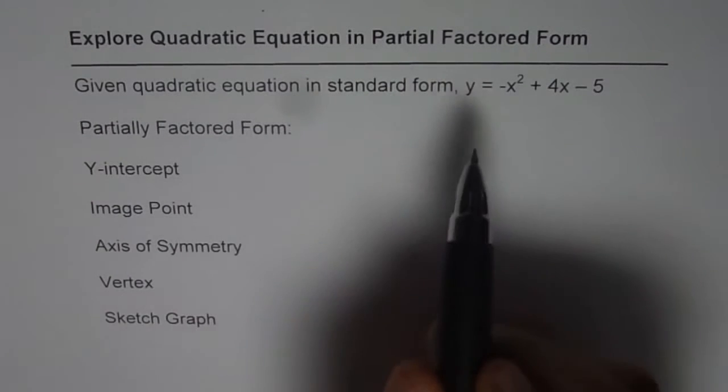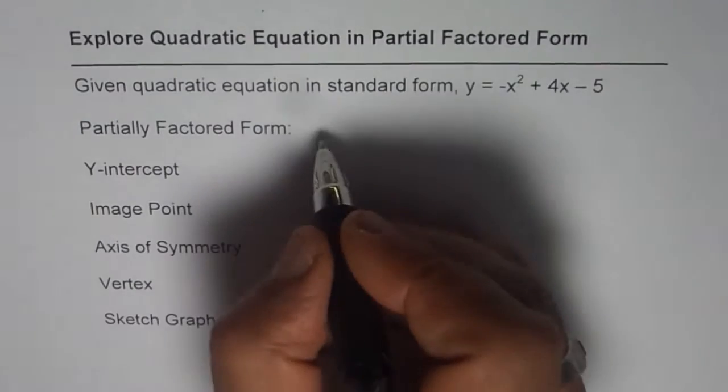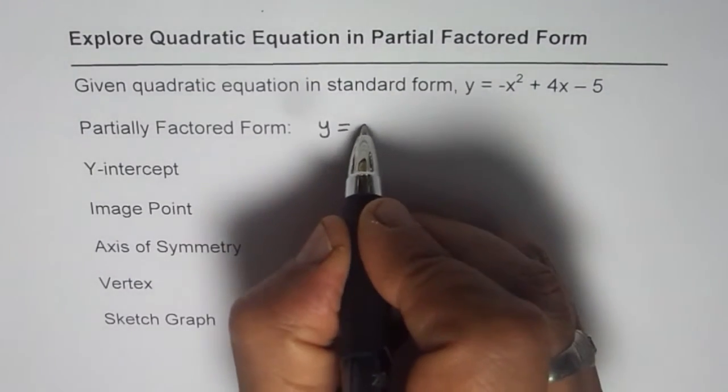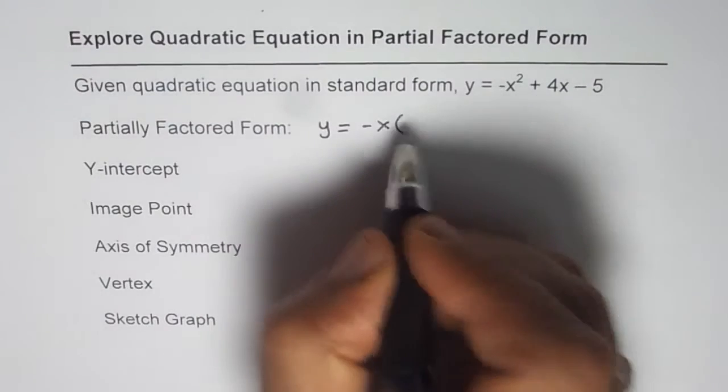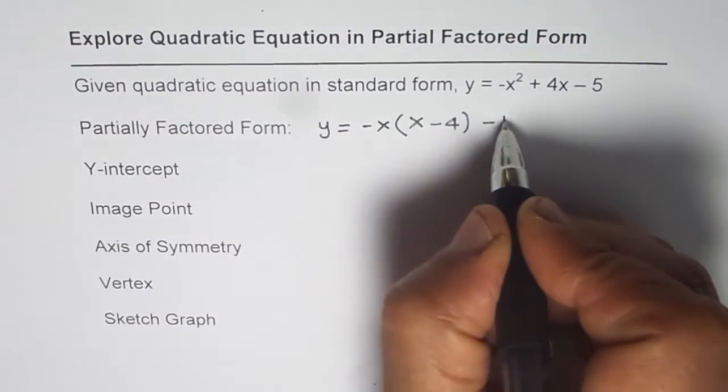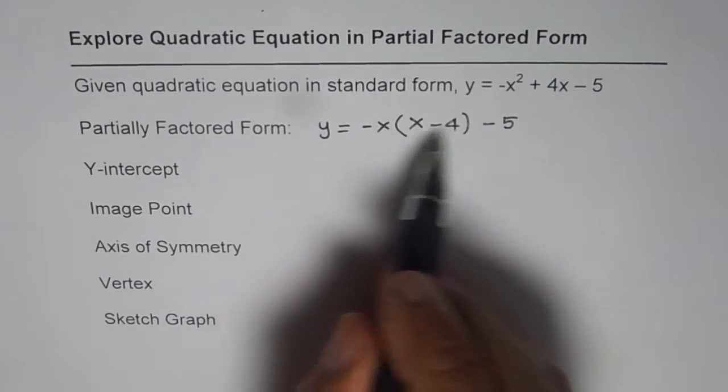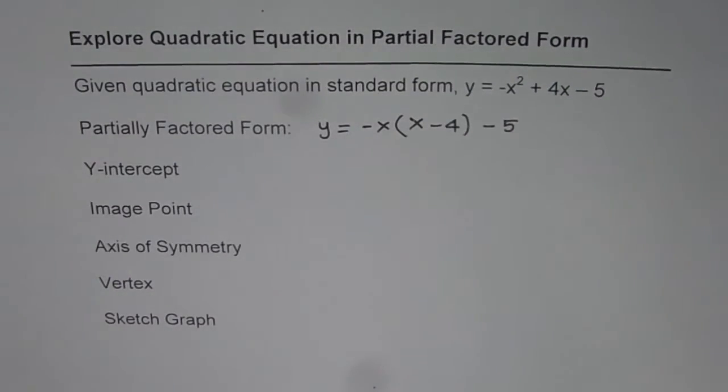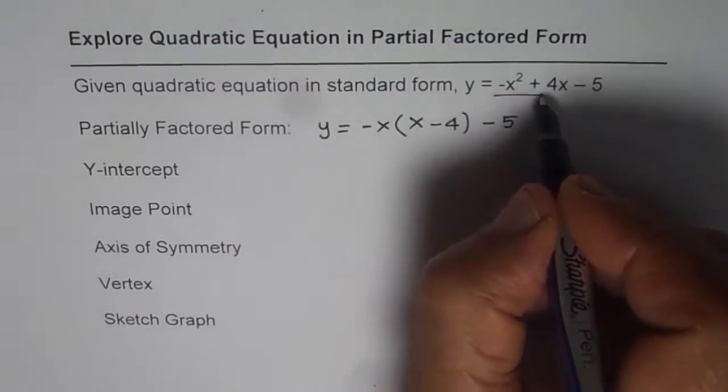Partially factored means you just factor the first two terms and you get your form as y equals minus x is common. So we get x minus 4 within the bracket and minus 5. That is your partially factored form. In partially factored form, we just factor the first two terms.